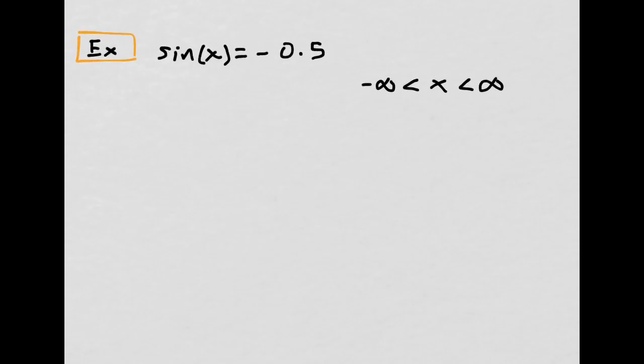This problem has the same directions: find or solve the equation on the specified interval. This is what's different, that's the only thing that's different. We could still use inverse trig, but in this case, sine of x equals negative one-half, that's on the unit circle.